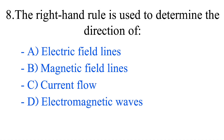Question number 8. The right hand rule is used to determine the direction of: option A, electric field lines; option B, magnetic field lines; option C, current flow; option D, electromagnetic waves. The correct answer is option A, electric field lines.